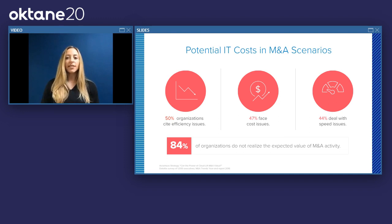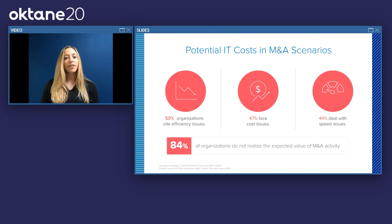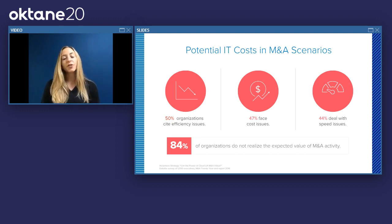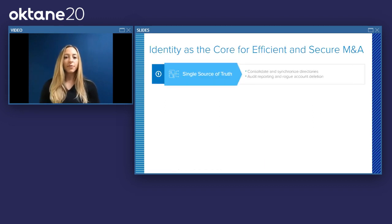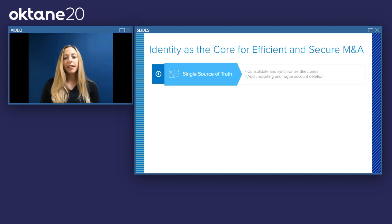When you dig into that 84% statistic, it's often related to the ability to effectively integrate the people, processes, and technology we previously spoke about. We've seen a number of our IT leaders really take this by the horns and use IT as a change agent to create agility and efficiency when it comes to M&A — doing this with identity at the core. There are four key areas these IT teams focus on to enable efficient and secure M&A.